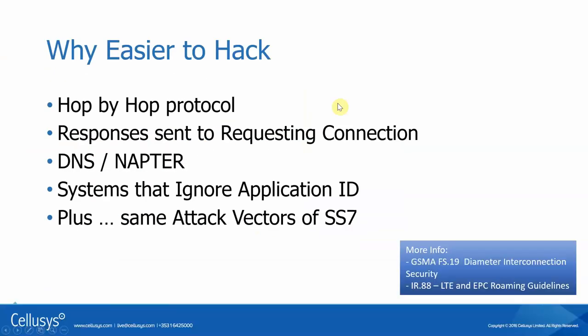Diameter is easier to hack because it's a hop-by-hop protocol. Responses go to the requesting connection. And then we have DNS and NAPTR problems. We also have systems that do things like UNor and application IDs, plus all the same attack vectors from SS7.